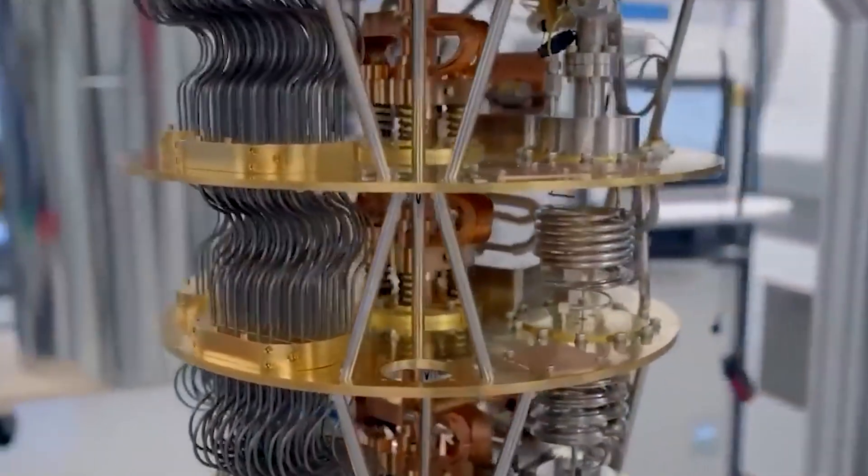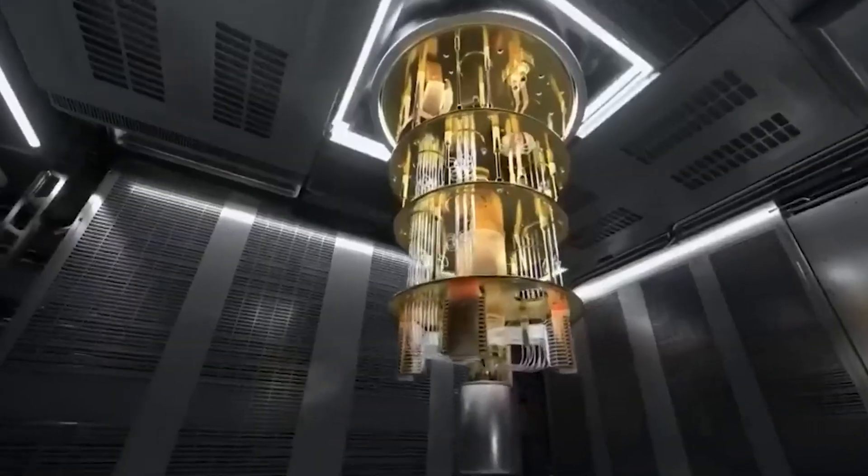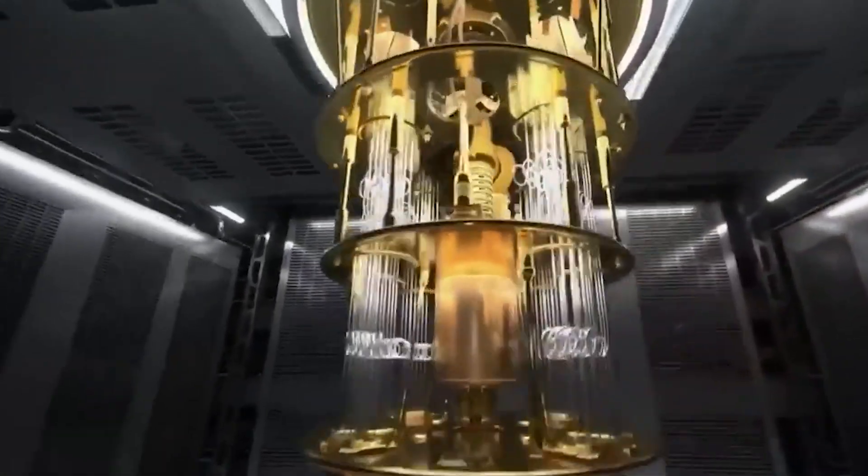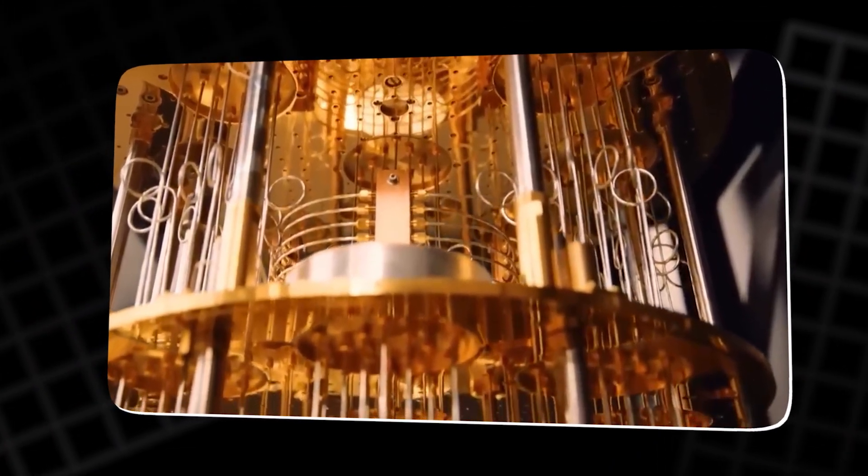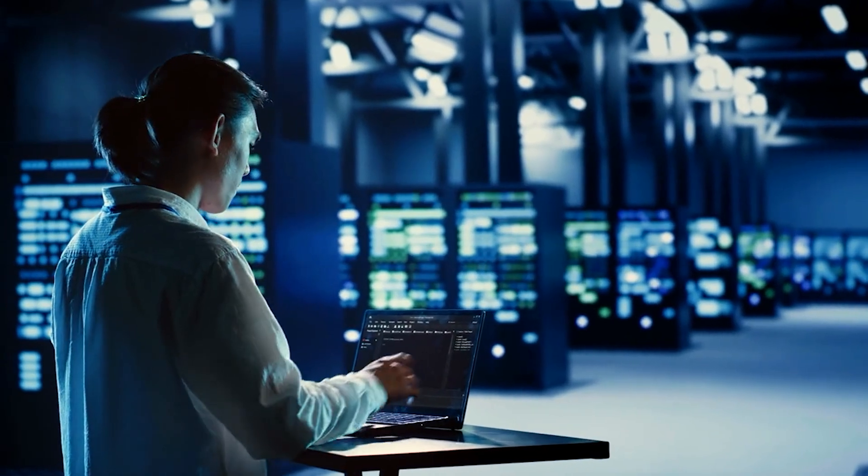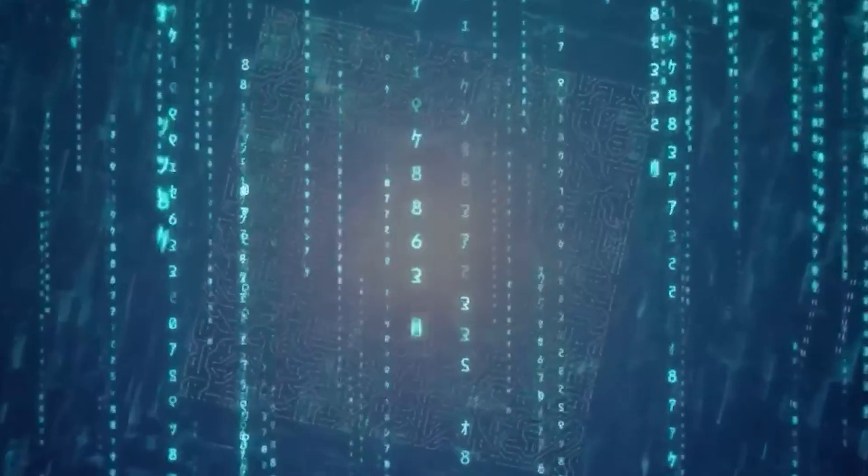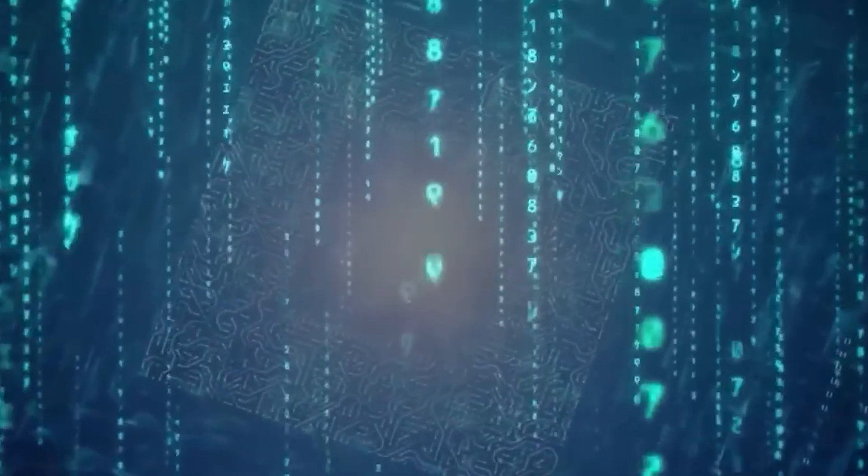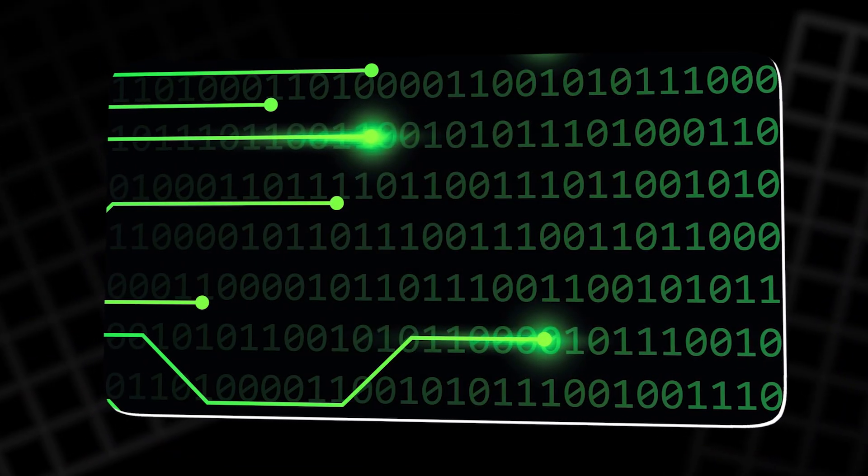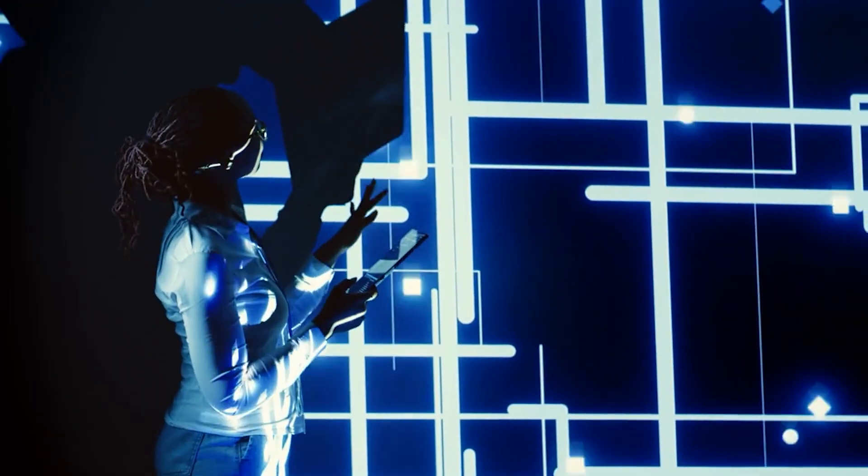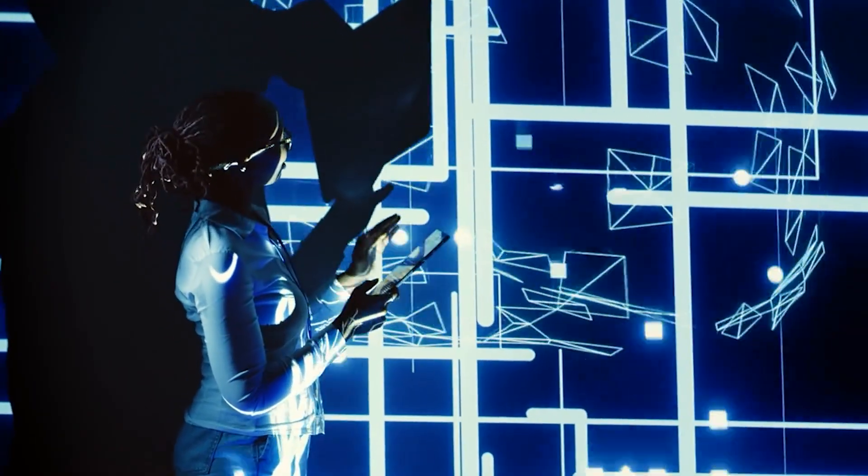Quantum computing, often abbreviated as QC, has earned a reputation for being as complicated as it is promising. Some joke that QC really stands for quite complicated. But stripped to its basics, the difference from classical computing is straightforward. Traditional computers use binary bits, zeros and ones, to process information. Quantum computers use qubits, quantum bits, which can exist in multiple states at the same time, thanks to quantum properties such as superposition and entanglement.